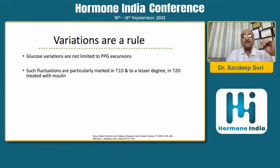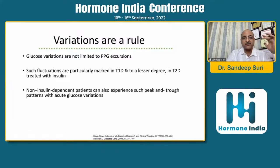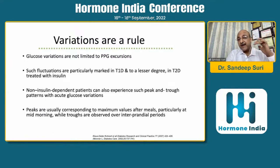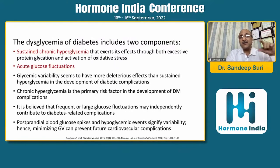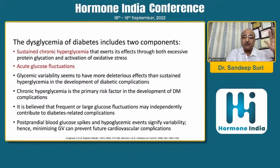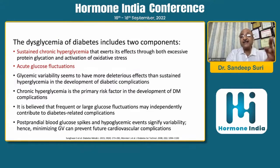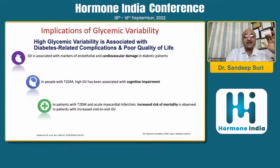Such fluctuations are specifically very marked in type 1 diabetic patients but to a lesser degree in type 2. Peaks usually correspond to maximum values after meals, particularly mid-morning, while troughs are observed during interprandial periods. Dysglycemia of diabetes includes two components: the age-old known chronic persistent hyperglycemia causing protein glycation and oxidative stress, and more recently, focus on acute glucose fluctuations - glycemic variability - which may independently contribute to diabetes-related complications.